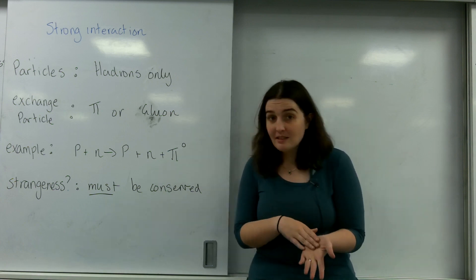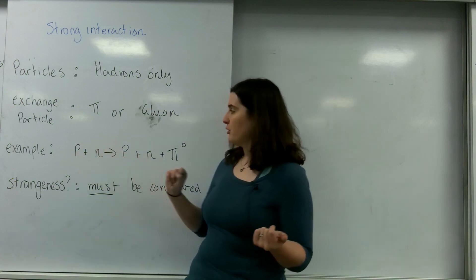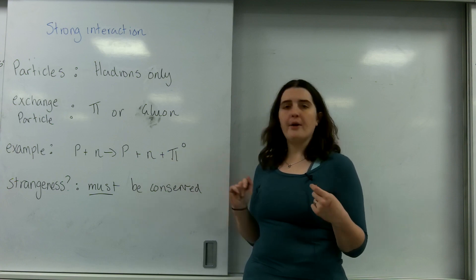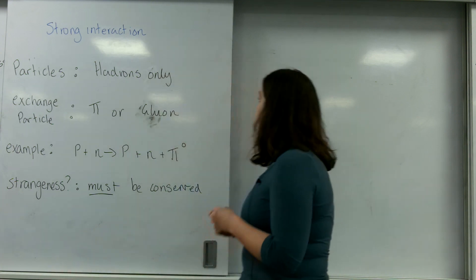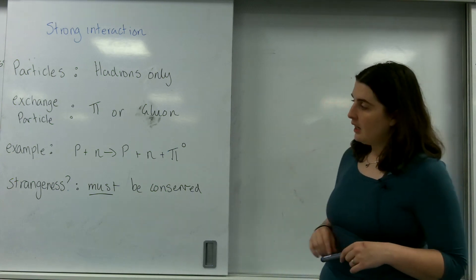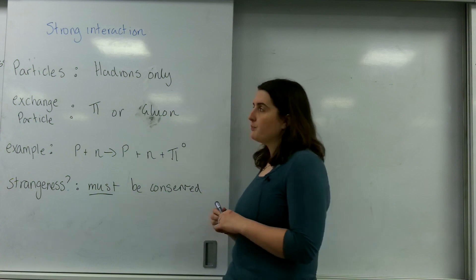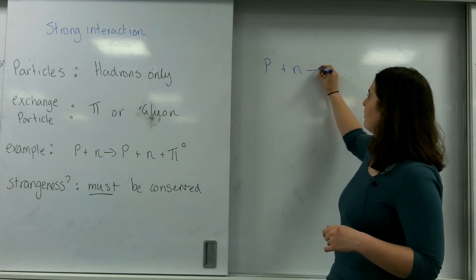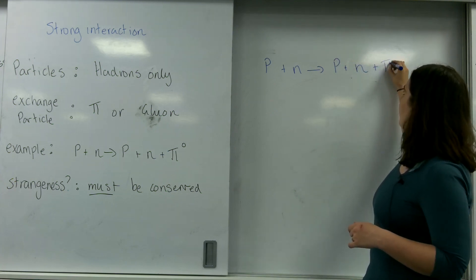An example of this is: I've got a proton plus a neutron going to a proton, a neutron, and a pion. I want to prove to you that this works using conservation rules, and I'll make a note about strangeness in a few seconds. So: proton plus neutron going to proton plus neutron plus pion.